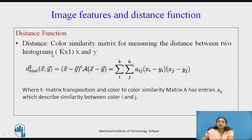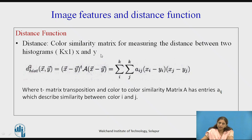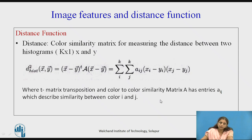The distance function suggested by experts uses a color similarity matrix for measuring the distance between two histograms. Where x and y are the two objects, this is a quadratic function to find the distance between two histograms. The term t is the matrix transposition, and the color-to-color similarity matrix A has entries Aij, which describe the similarity between color i and color j.